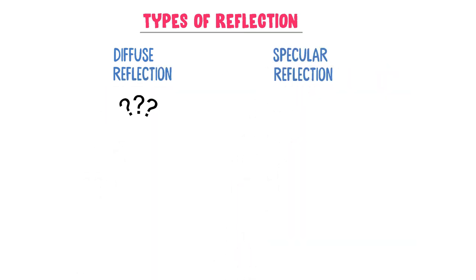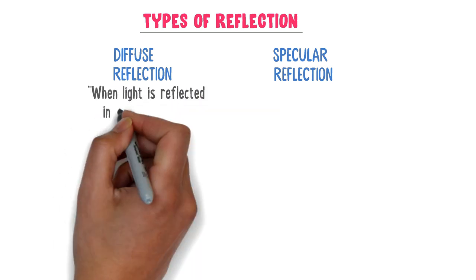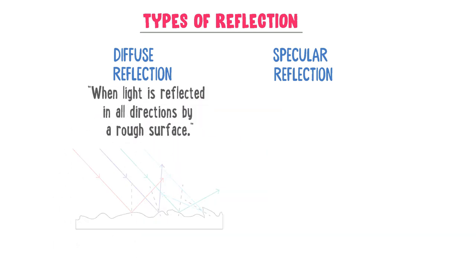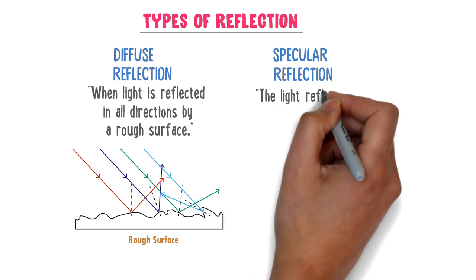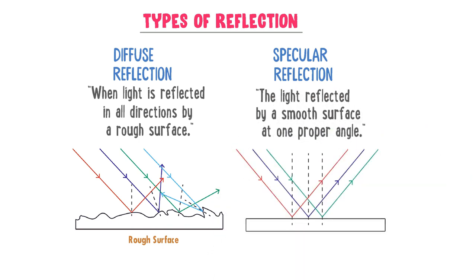When light is reflected in all directions by a rough surface, it is called diffuse reflection or rough reflection. For example, the light reflected by a rough surface is diffuse reflection. On the other side, the light reflected by a smooth surface at one proper angle is called specular reflection or smooth reflection. For example, the light reflected by a smooth surface is specular reflection.